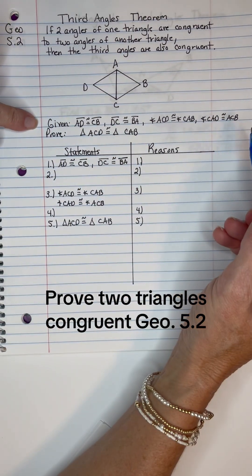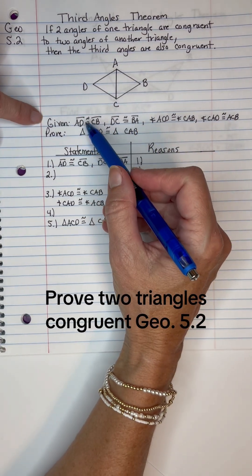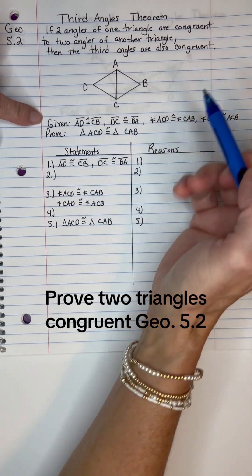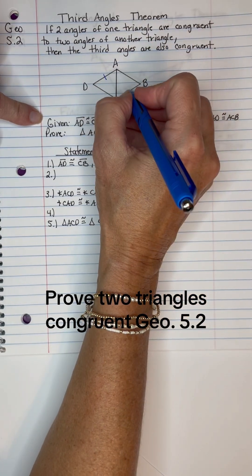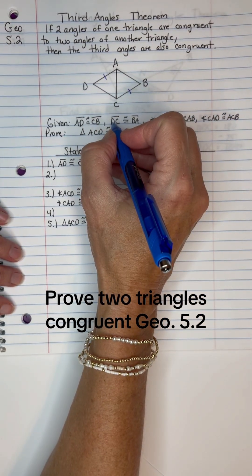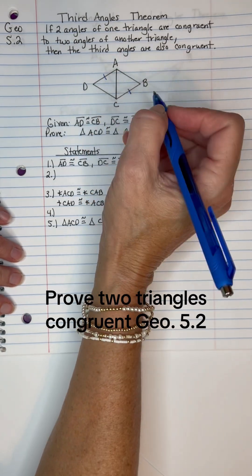Alright, we're given some information that we need to mark up. AD, segment AD is congruent to segment CB. So AD a hash mark, CB a hash mark. DC, segment DC is congruent to segment BA.